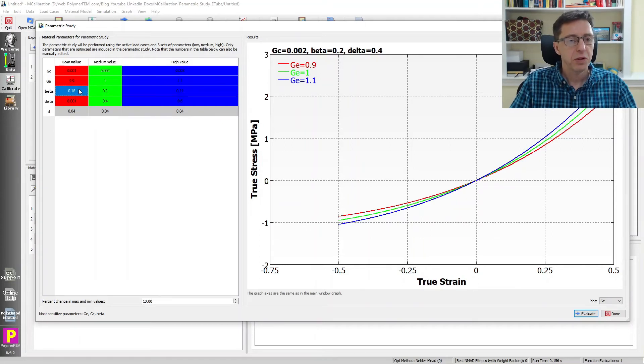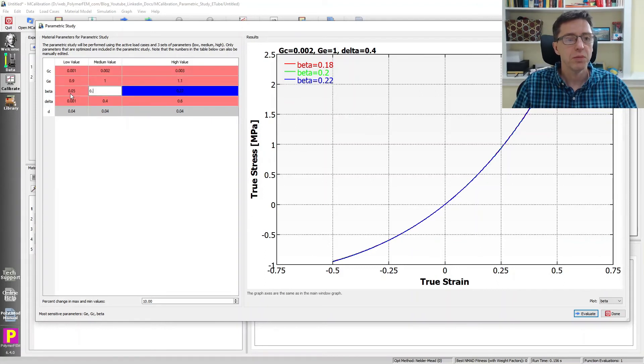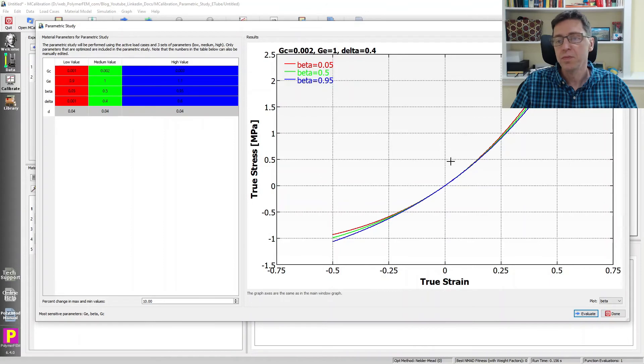So what does beta do? Beta, as I mentioned, is a parameter in the Ogden hyperelastic model, and it should, according to the ANSYS manual, be between 0 and 1. So these are all very close. Let's plot the beta value here. It has very little influence when they're so close together. So let's check a value of 0.05, 0.5, and 0.95 perhaps, and run this. Now we can see that the beta value has an influence. It increases the stiffness in tension. As beta increases, the stiffness in tension goes down, but the stiffness in compression goes up. So it allows you to tailor a bit the response between tension and compression, but not too much. It's not a very strong influence on it.